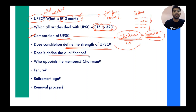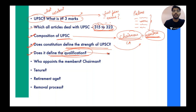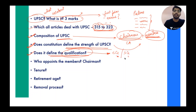After that, check whether any qualification is defined in the Constitution — whether a member has to be an IAS officer or not, or whether any academic qualification is given. Actually, the Constitution does not define any qualification. It only states that members should have experience in government services — state government or central government — and they should have served for a specified tenure.